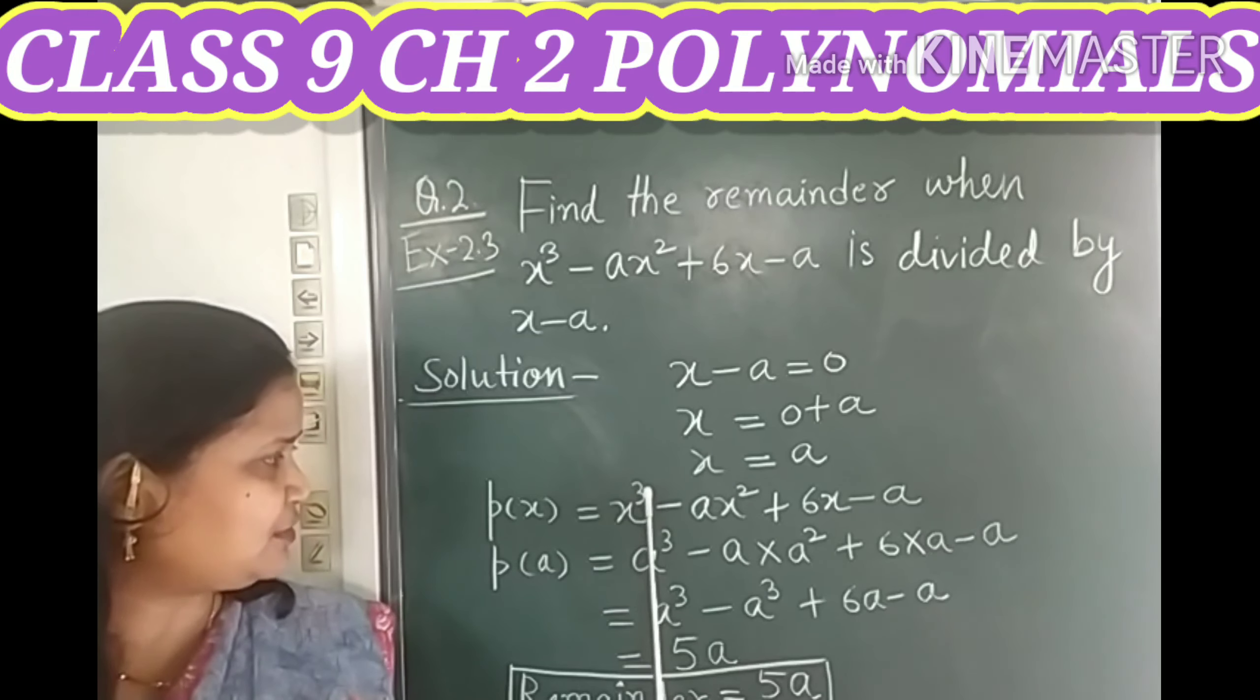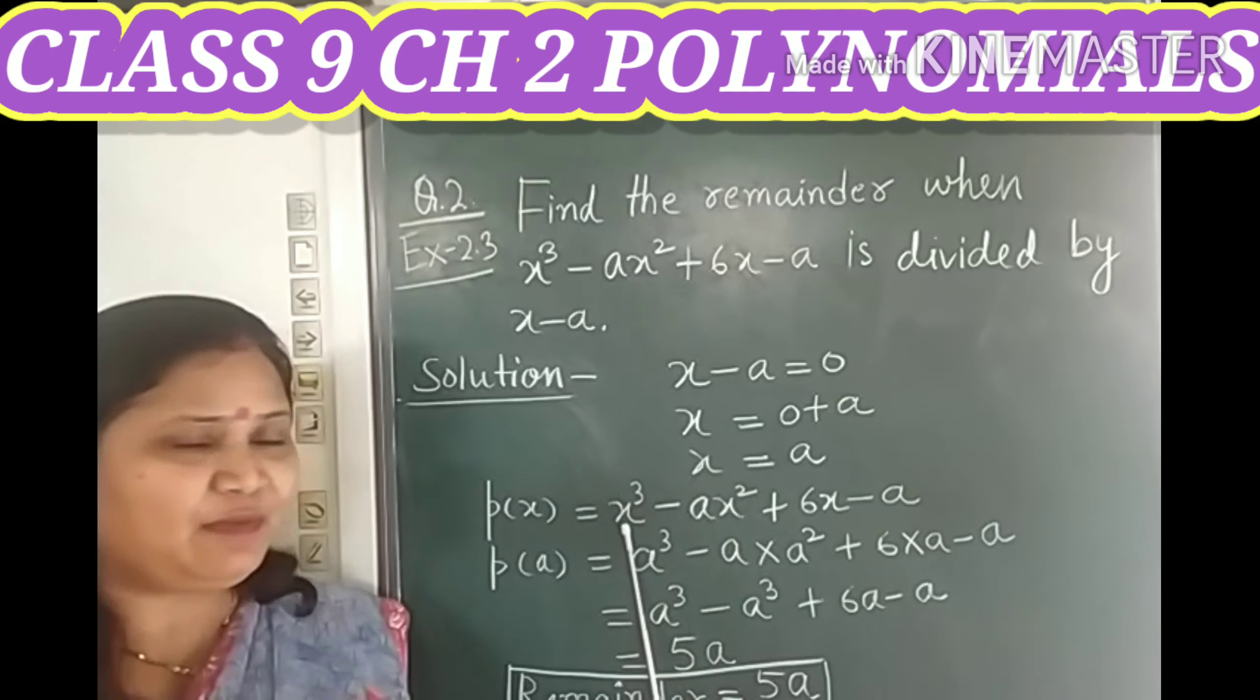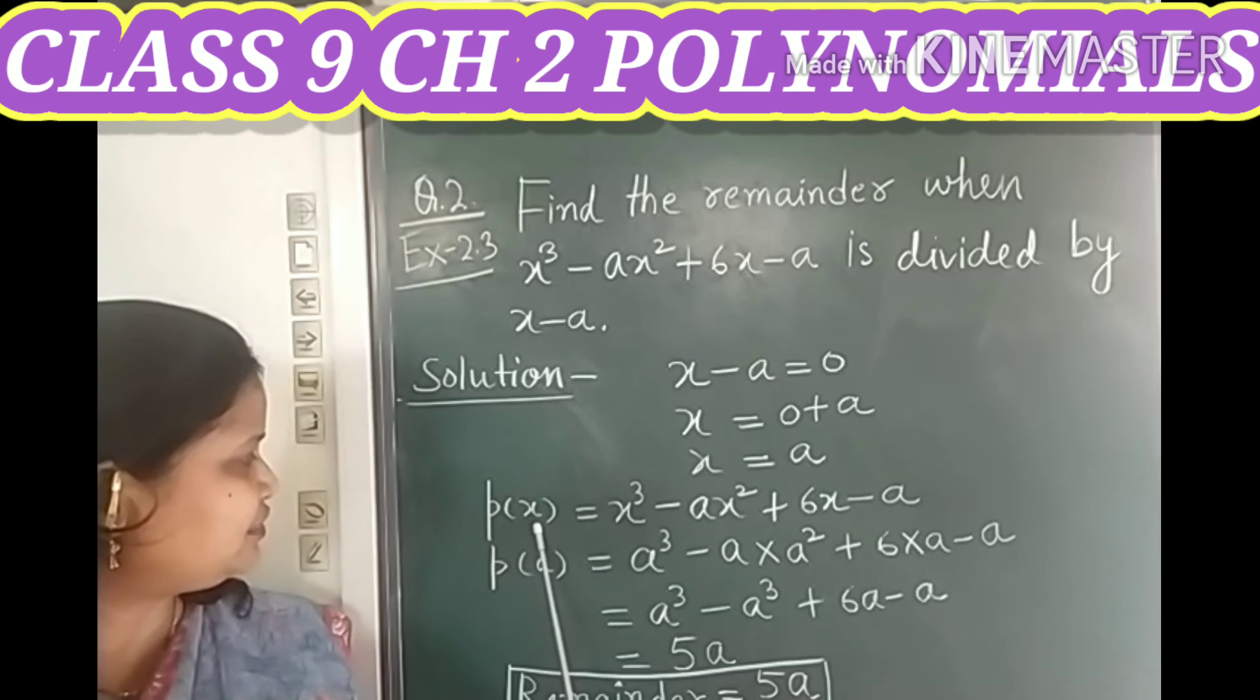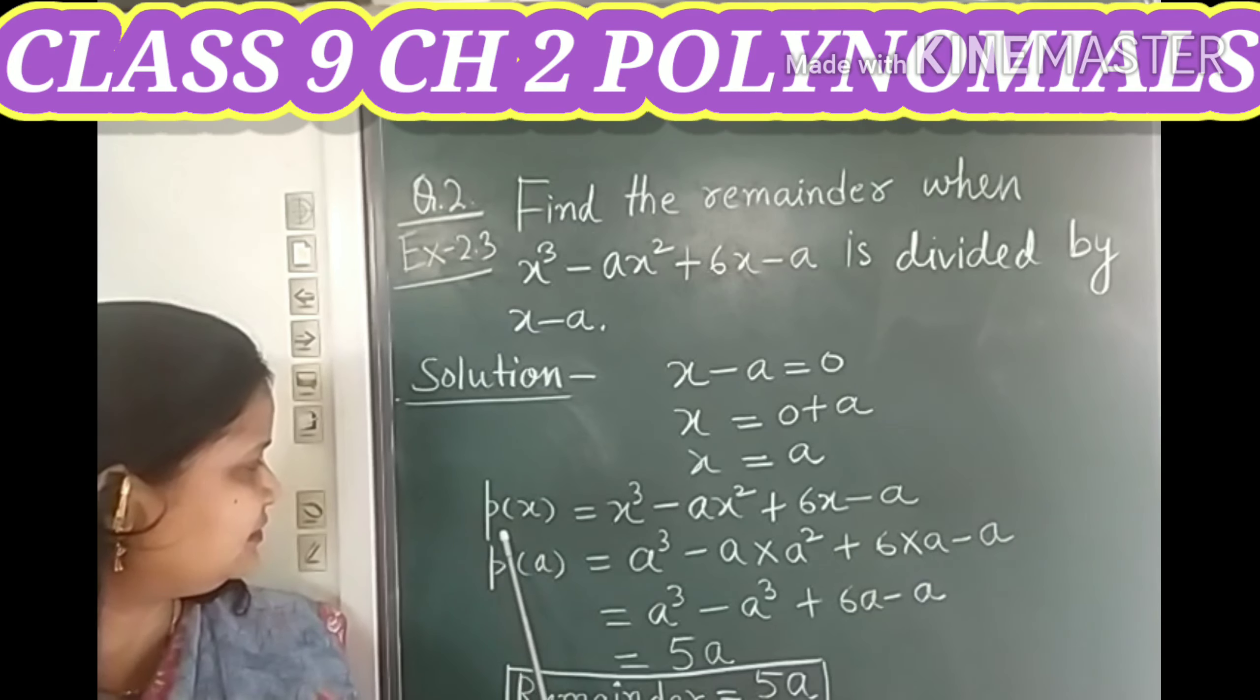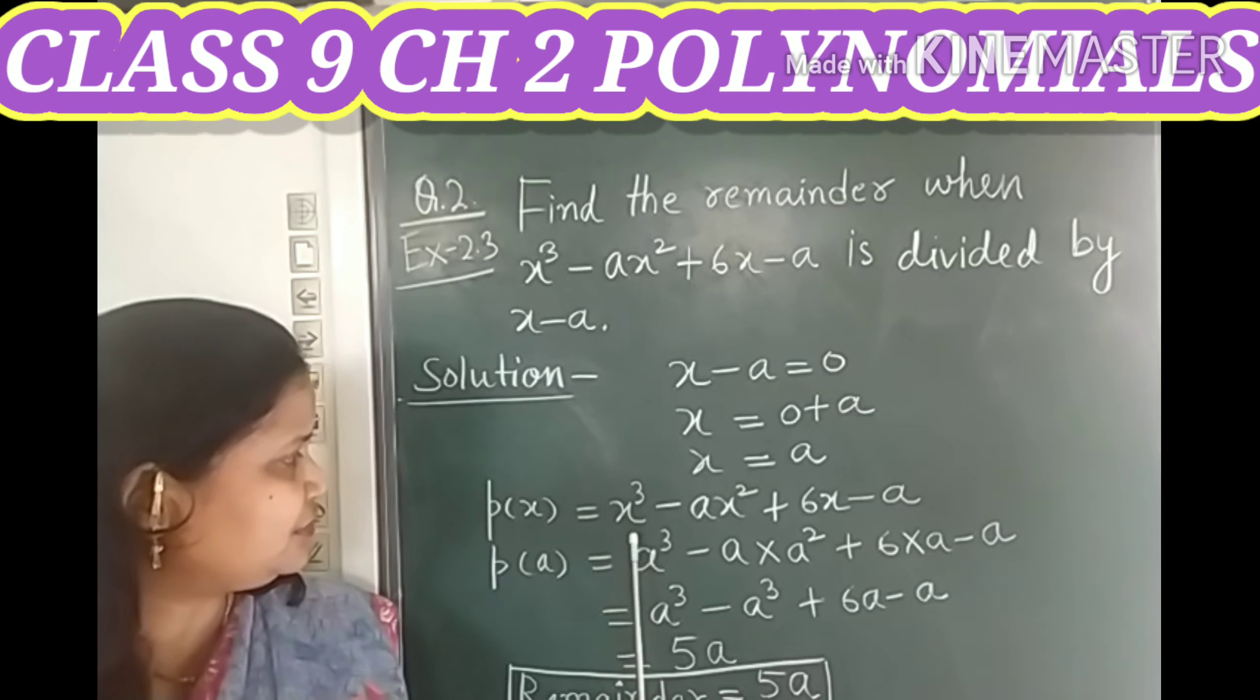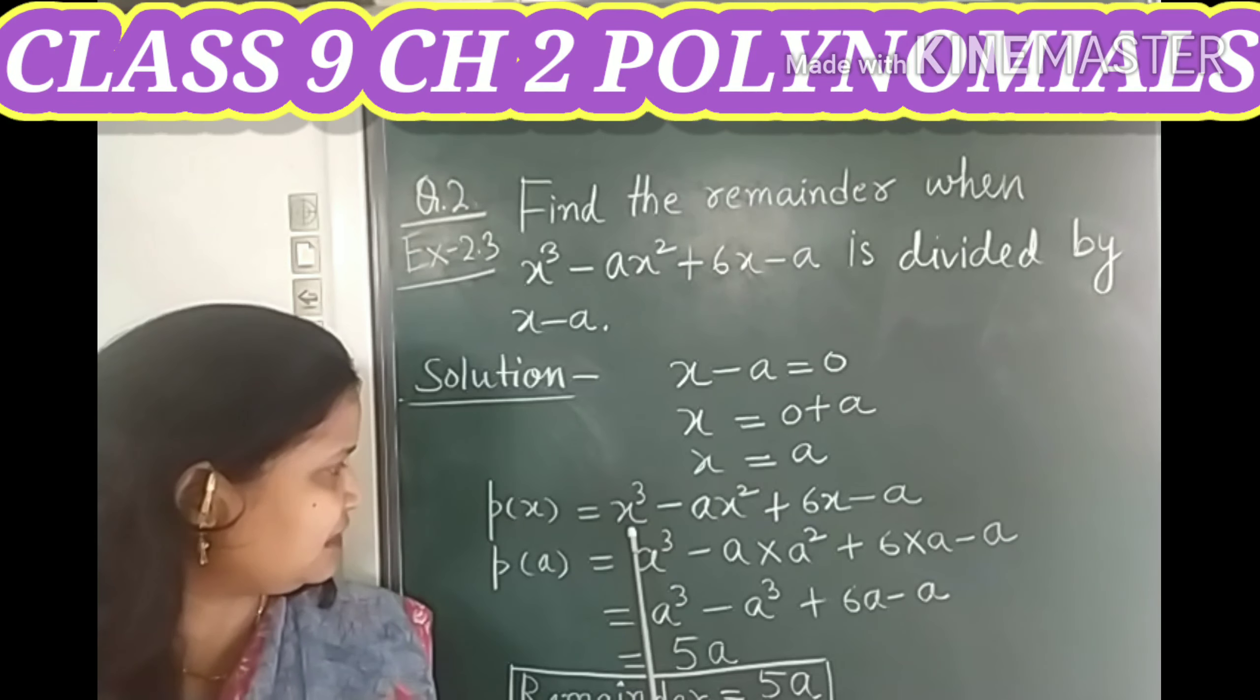Now children, we will substitute a in place of x in this polynomial. So when we substitute a in place of x, it becomes p(a) and now substitute a in place of x here also.